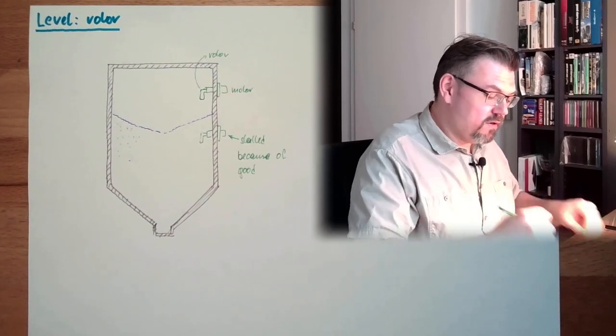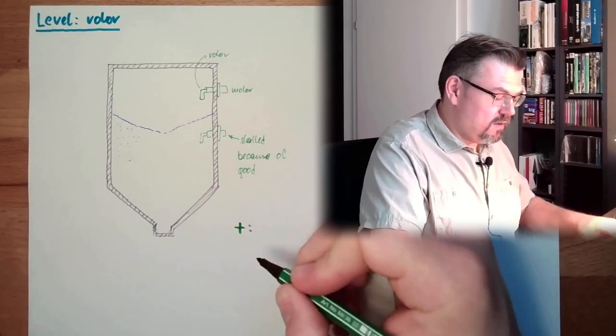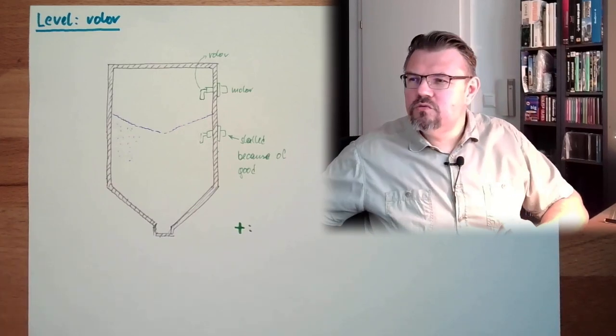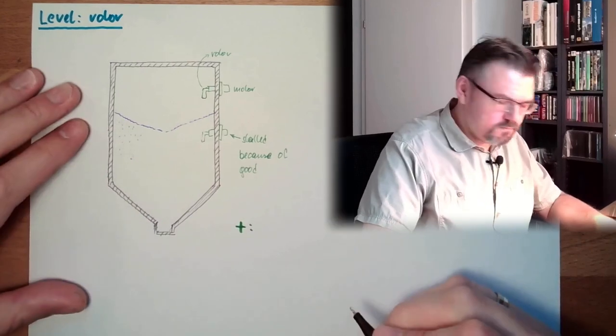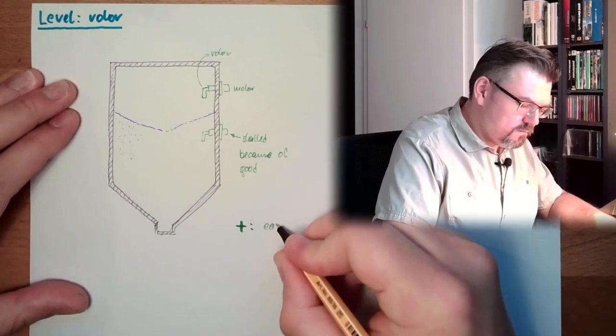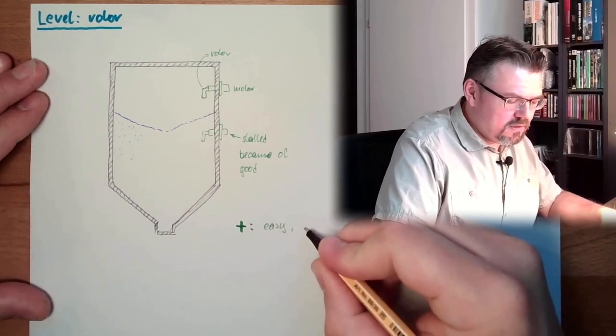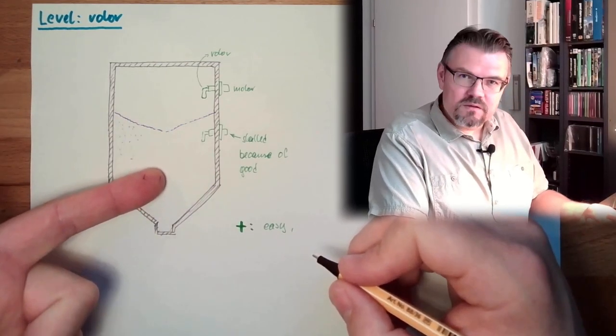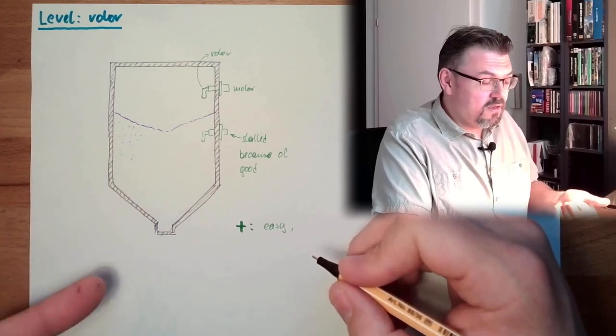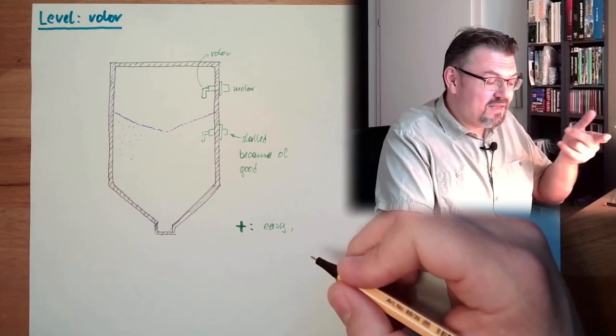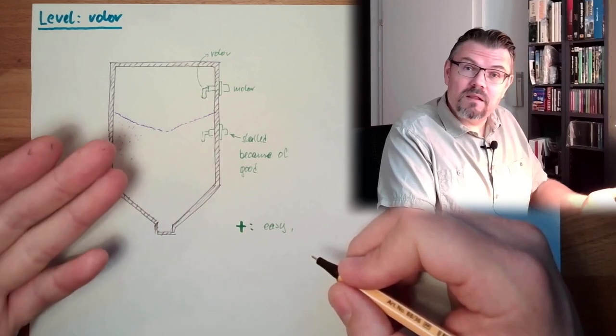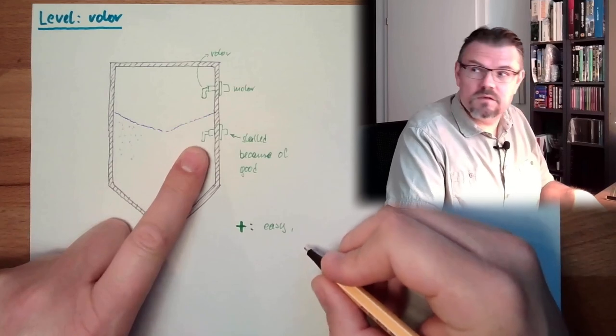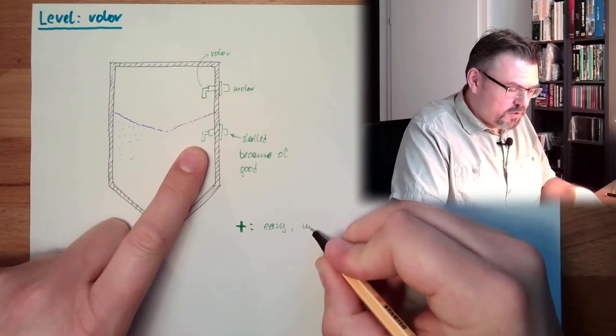The upside, of course, is it's easy, understandable, no issue at all there. It doesn't really matter what type of bulk good this is. It can be grain, it can be cement, it can be sand, it can be different bulk good, it will always work the same way, so there is no adjustment.